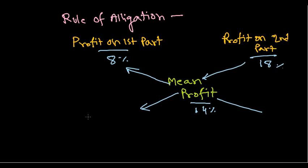So what we do here: we simply take this value minus the mean, and we take here mean minus the value. So mean minus the profit: 14 minus 8 is 6. In this case, 18 minus 14 is 4. So you get those two values: 4 and 6.